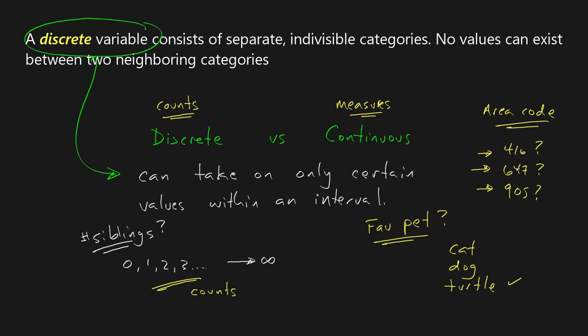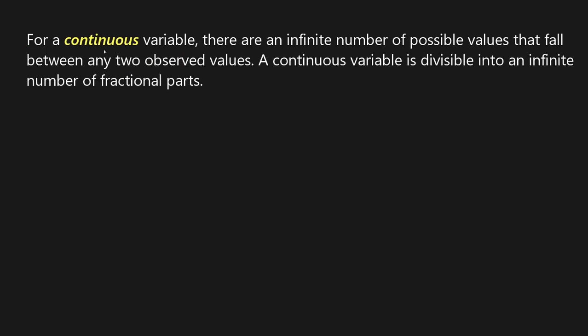So let's have a look now at continuous and how it compares, continuous variable and how it compares. For continuous variable, there's an infinite number of possible values that fall between any two observed values. A continuous variable is divisible into an infinite number of fractional parts.